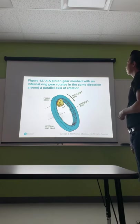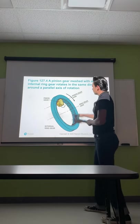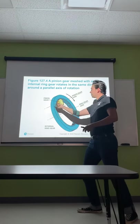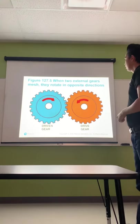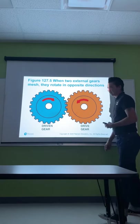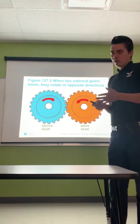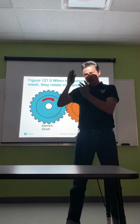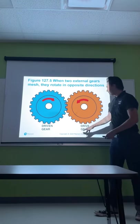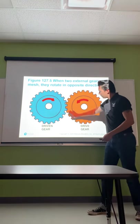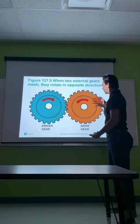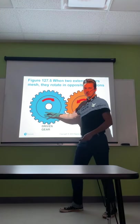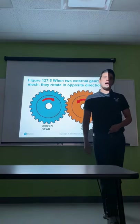A pinion gear meshed with an internal ring gear rotates in the same direction around a parallel axis of rotation. As the outside gear and inside ring gear interact, the ring gear rotating causes the pinion gear to rotate in the same direction. When you have a drive gear and a driven gear — the power comes from the engine through the clutch to the input shaft — the drive gear applies force which rotates the driven gear. If two gears are meshed together, one spinning one direction will cause the other to spin in the opposite direction.